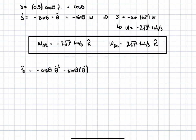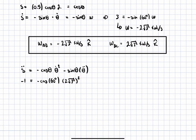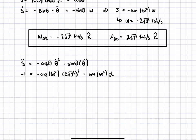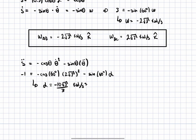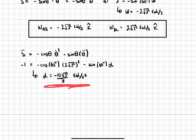Plugging in: negative one equals negative cos of 60 degrees times (two root three) squared, minus sine of 60 degrees times alpha. Note that the sign on theta-dot doesn't matter since it's squared. Solving for alpha, we get alpha equals 10 square root of three over three radians per second squared, with a negative sign. But this is just a magnitude — we need the direction.